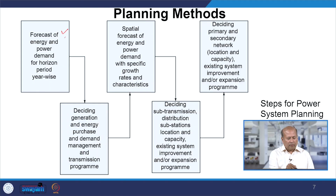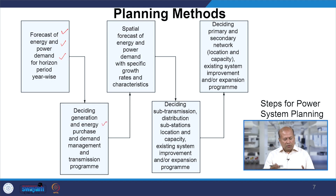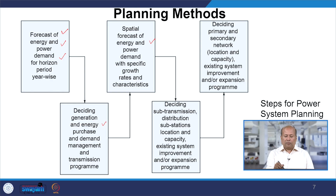The planning methods we use involve first forecasting energy and power for a period of 1 to 2 years, then deciding on generation and energy purchase — planning how to procure energy. We also do spatial forecasting of power demand with a specific growth rate over time. For example, over 3 years, the increase could be 7%, then 8%, then 10%; you cannot plan with a constant 7% increase. So you need to plan how demand will increase over the period.